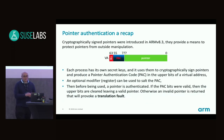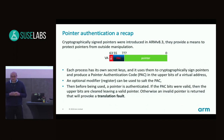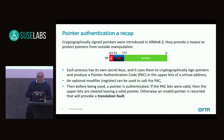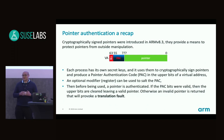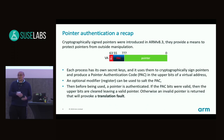In ARM 8.3 upwards, it is a mandatory feature in the architecture - we have a set of instructions to cryptographically sign pointers. I've got a diagram of a pointer here. The bit in green is what applications control, dereference, and get from the system. The bit in blue is an extra set of data - the signature - that verifies whether the pointer is genuine or has been manipulated.